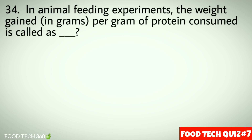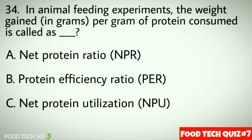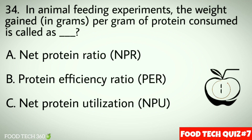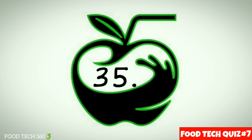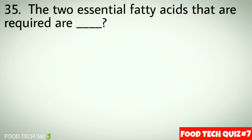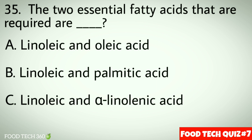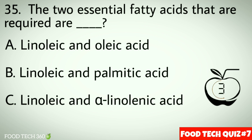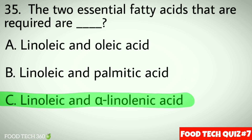Question number 34: In animal feeding experiments, the weight gained per gram of protein consumed is called — options: a) Net Protein Ratio, b) Protein Efficiency Ratio, c) Net Protein Utilization. Correct answer: b) Protein Efficiency Ratio. Question number 35: The two essential fatty acids that are required are — options: a) Linoleic and Oleic acid, b) Linoleic and Palmitic acid, c) Linoleic and Alpha-Linolenic acid. Correct answer: c) Linoleic and Alpha-Linolenic acid.